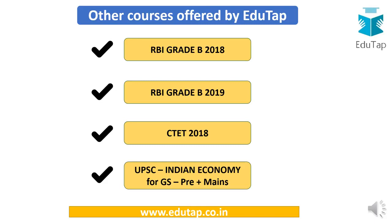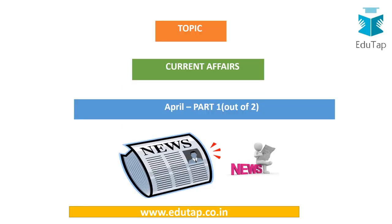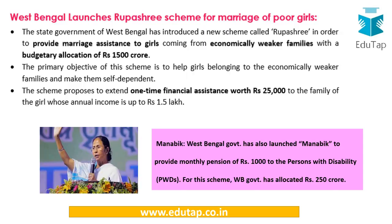In this particular video, we are going to cover agriculture and related current affairs from the month of April. Since this is Part 1, we'll be coming up with another part to complete coverage of April. In case you've missed our January, February, and March videos, you can go back and watch those as well to cover all the current affairs. The first news of the day is about a very important scheme from West Bengal — the Rupashree Scheme.